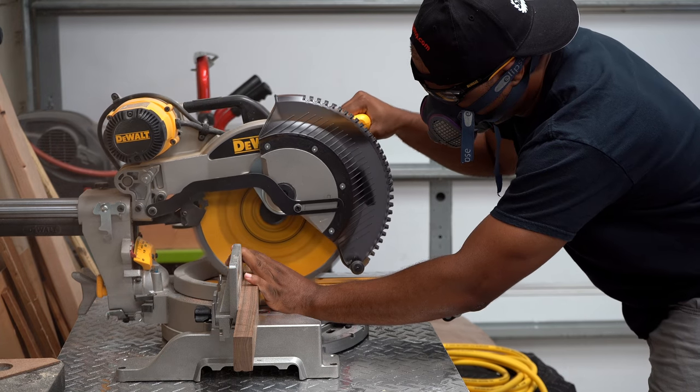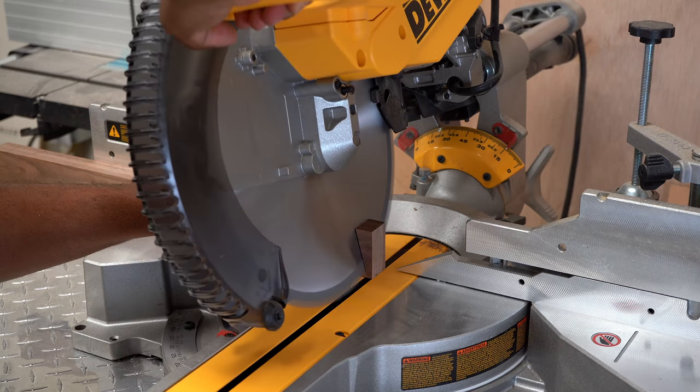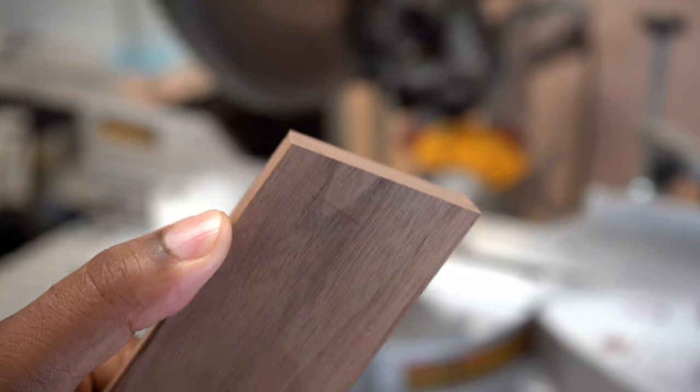After cutting the board down on the miter saw, I decided that I wanted it to lean forward, so I then put a 15 degree miter on it.